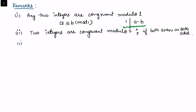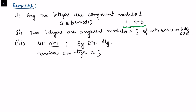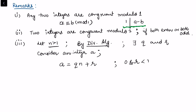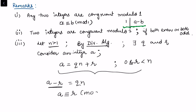To understand congruences in general, fix an integer n strictly greater than 1 for a non-trivial case. By the division algorithm, for any integer a divided by n, we get a equals q·n plus r, where the remainder satisfies 0 ≤ r < n. From this, a minus r equals q·n, meaning n divides a minus r.